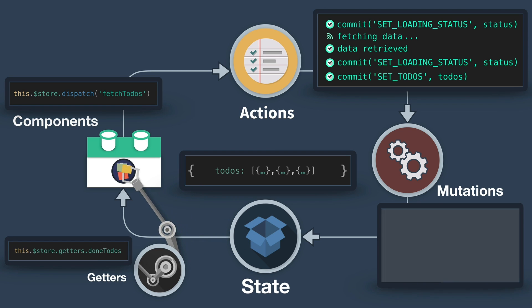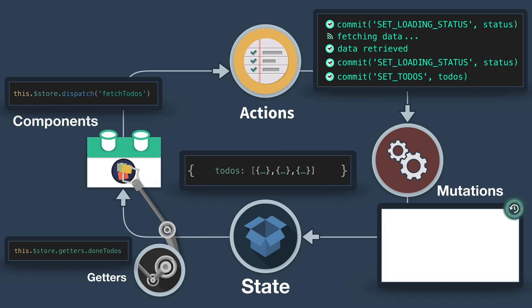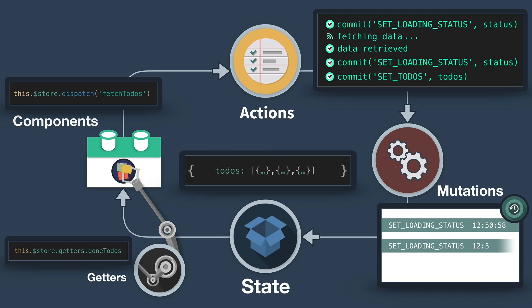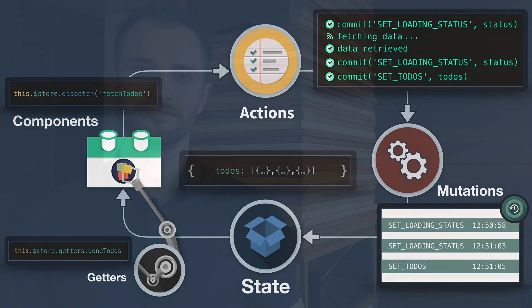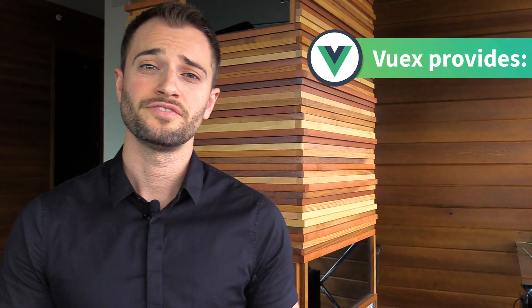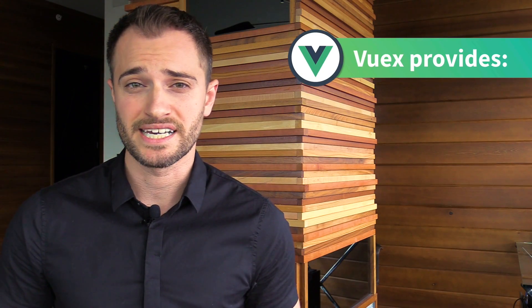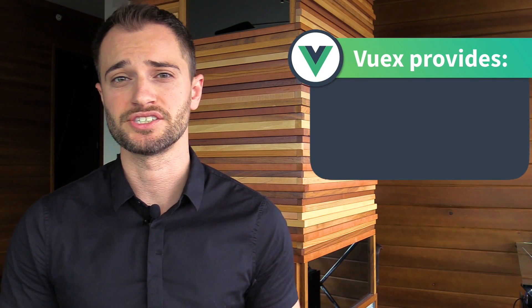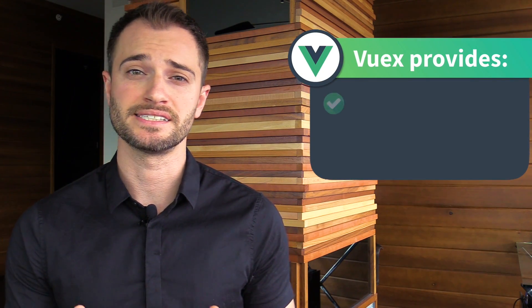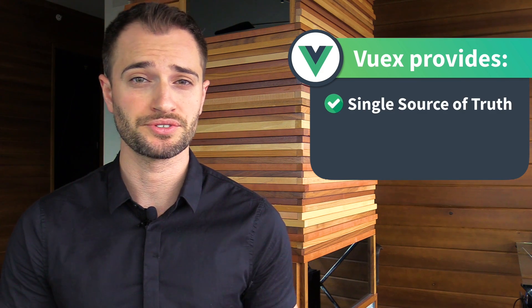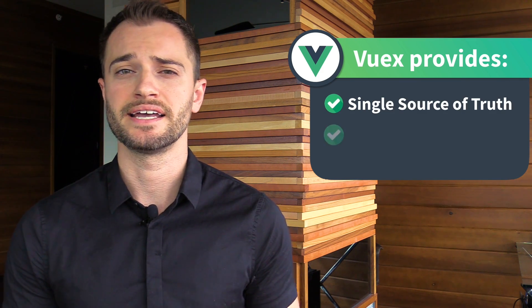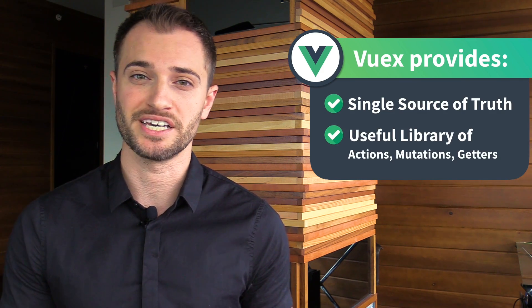And if we only wanted to get the done todos, we can use the getter to achieve that. Then, if we look at the Vue DevTools, we could see a timestamped record of each mutation that was committed. Hopefully you now understand how Vuex can enhance your application by providing a single source of truth for your state, and a useful library of actions, mutations, and getters.